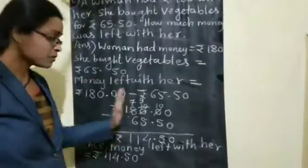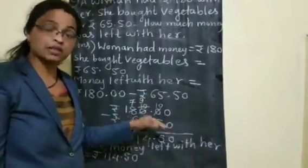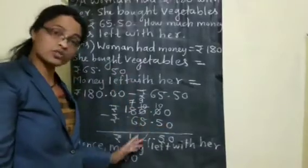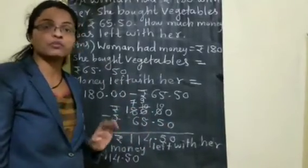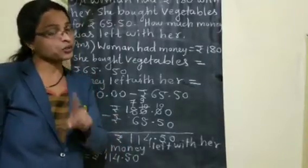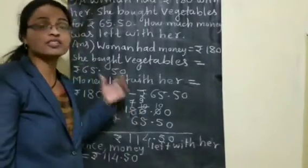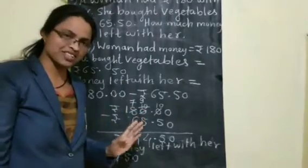Understood, children? Arrange the numbers properly; wherever required, borrow the number, but write how much is left correctly, and do the minus calculation properly to get your answer. Don't forget to write the rupees symbol because this chapter is about money. I hope you have understood subtraction of money and the word problems based on it. Please go through the exercise, practice the problems, and today we will wind up our session here. Next time with a new subtopic — till then, bye-bye, stay safe, take care children.